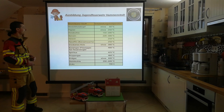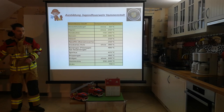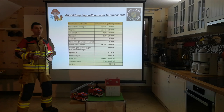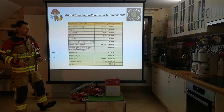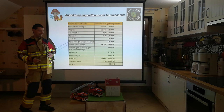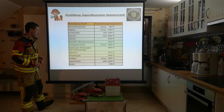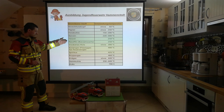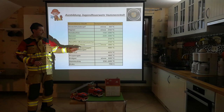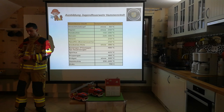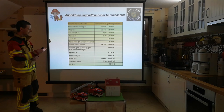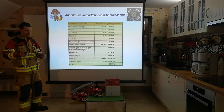Here is a table showing the ignition temperatures at which different substances begin to burn on their own — essentially the auto-ignition temperature, as discussed in the last training session. For example, paper ignites at 250 degrees. Benzine (gasoline) as a liquid. Dry wood ignites at around 300 degrees. Anyone who wants this table can simply let us know and we'll provide it as a PDF.